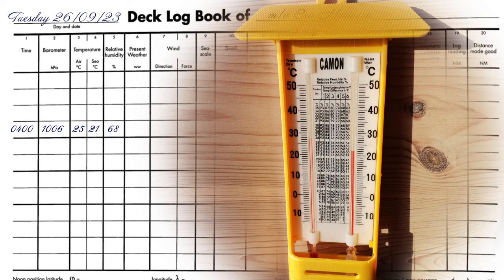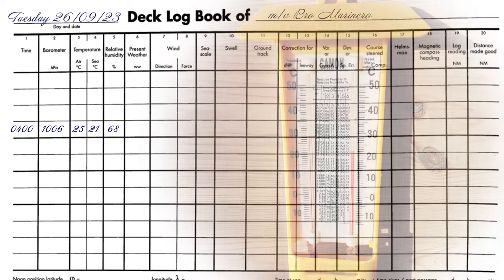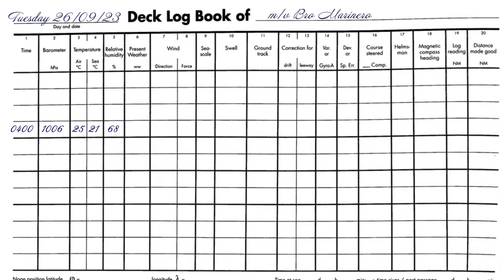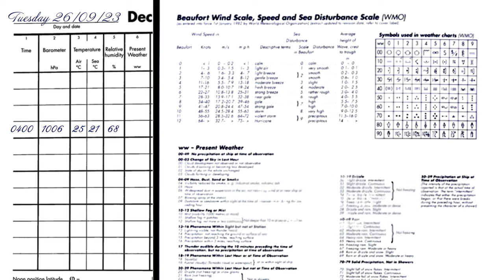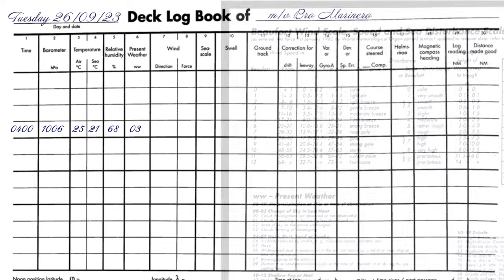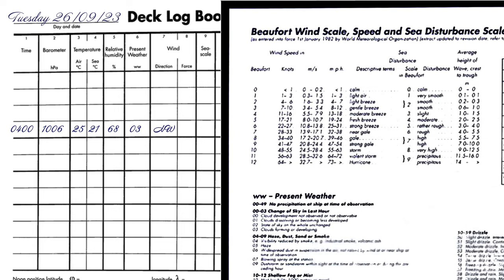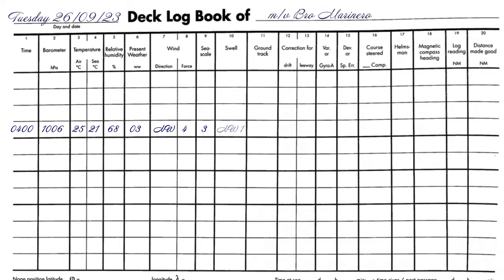Relative humidity is calculated by a special table that is often printed on the hygrometer itself. For present weather, you have to write the code that you can find in the first pages of the log book. Wind direction and force are recorded using the Beaufort scale, which you also find in the first pages of the log book.